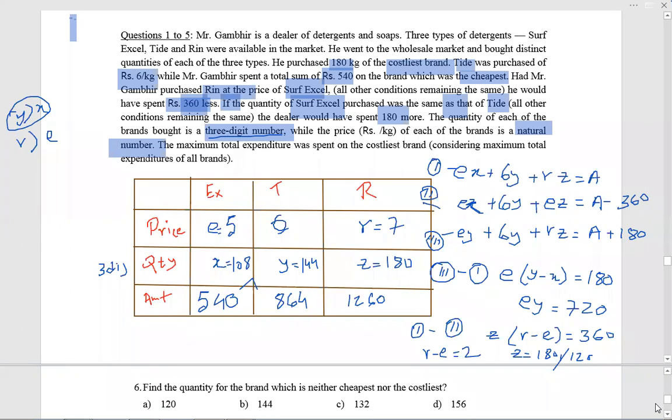Find the quantity for the brand which is neither cheapest nor costliest. Neither cheapest nor costliest is Tide. Quantity 144, option B. Correct answer is option B.